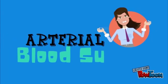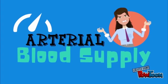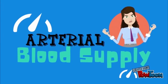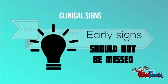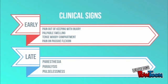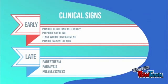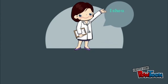Thereafter, arteriole inflow may also be compromised. Patients with compartment syndrome often present with pain out of keeping with the injury. On examination, you may find palpable swelling, a tense woody compartment, and pain on passive stretch — these are early signs and should not be missed. Late signs include paresthesia, paralysis, and pulselessness; at this point, the damage may already be irreversible.